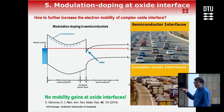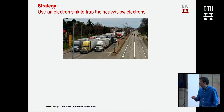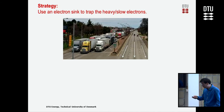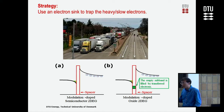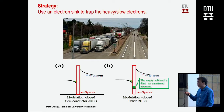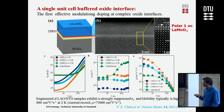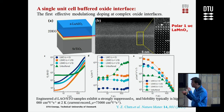What we do is try to stop only the trucks on their own path and let the cars move on their own path. In semiconductors you only use a spacer layer to separate the electrons from donors, but if we put an empty subband at the spacer, this could be used to filter them. We put only one unit cell — 0.4 nanometers — as the interface layer, and you can increase the mobility at least 20 times and at best 100 times.